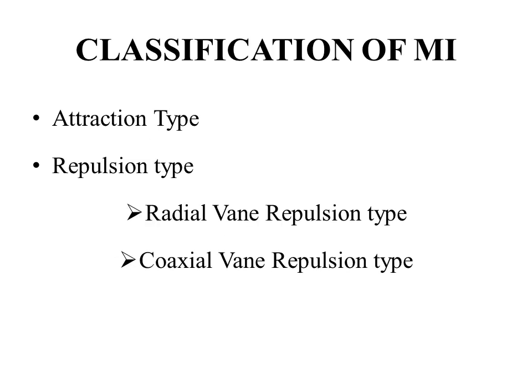The moving iron instruments are classified into attraction type and repulsion type. The repulsion type moving iron instruments are further classified into radial vane repulsion type and coaxial vane repulsion type.